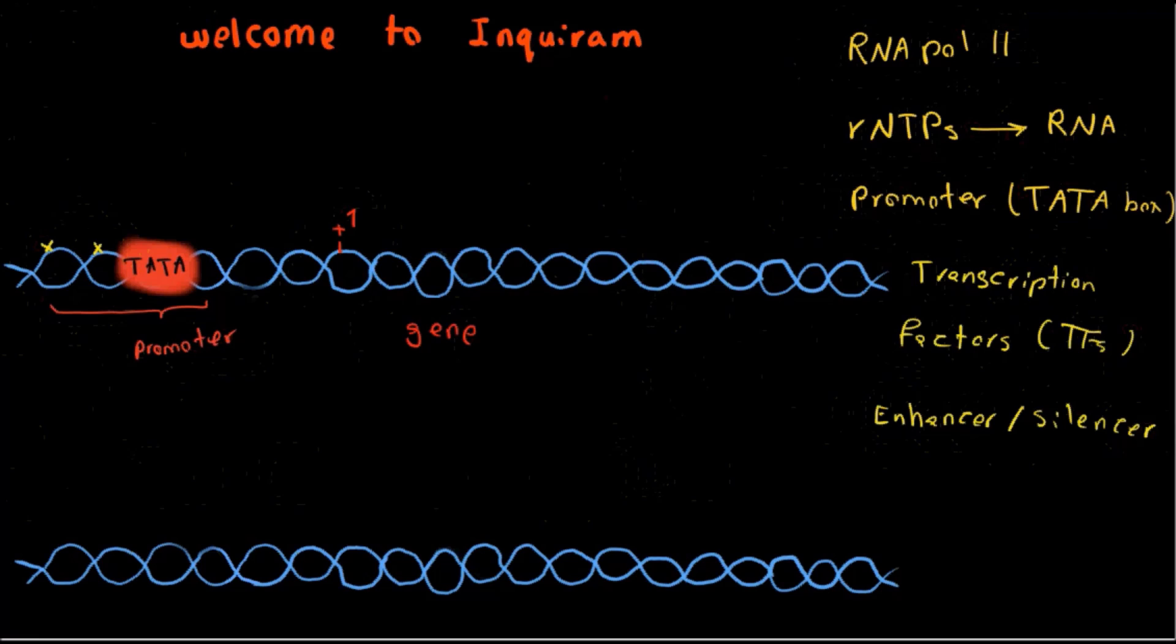Remember, only one strand is used as template. And RNA polymerase reads the DNA template from its 3' to 5' direction to produce pre-mRNA transcript from its 5' to 3' direction. This is very important to understand.